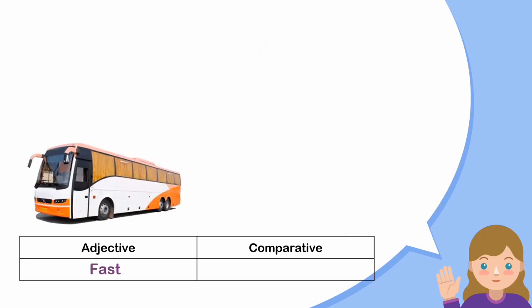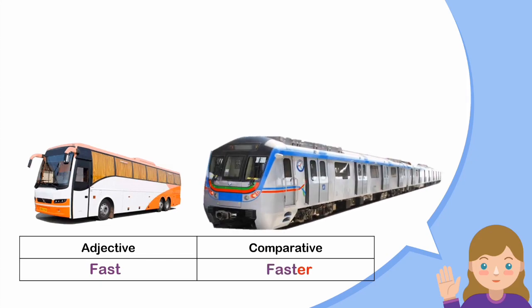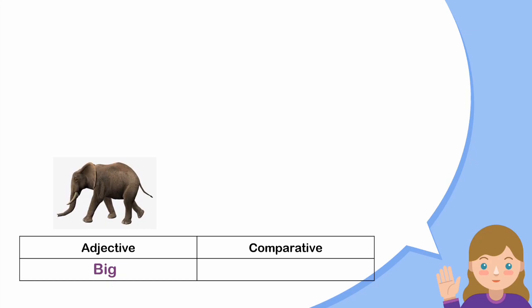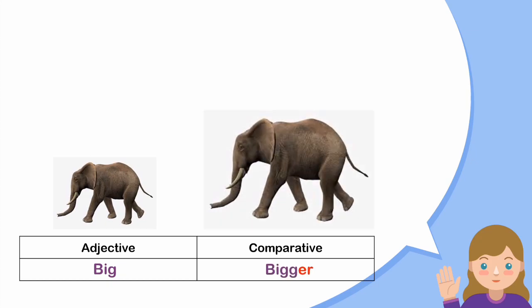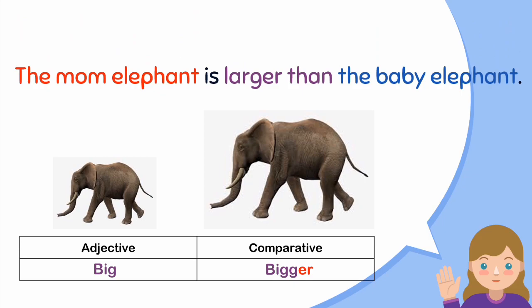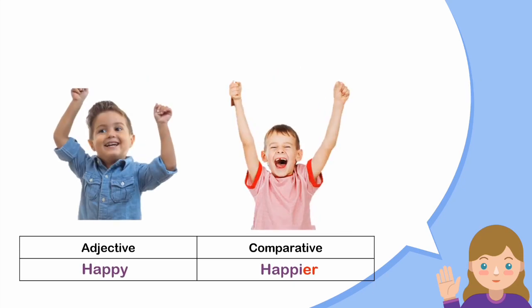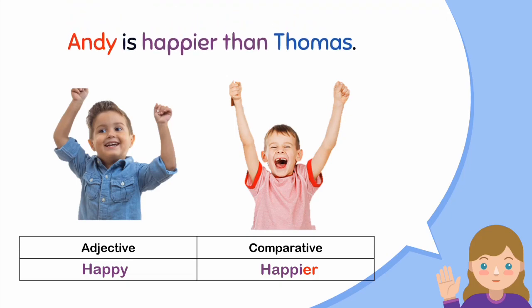'Long' (panjang) → 'longer' (lebih panjang). The red pencil is longer than the yellow pen. 'Fast' (cepat) → 'faster' (lebih cepat). The train is faster than the bus. 'Big' (besar) → 'bigger' (lebih besar). The mom elephant is larger than the baby elephant. 'Happy' → 'happier'. Andy is happier than Thomas.